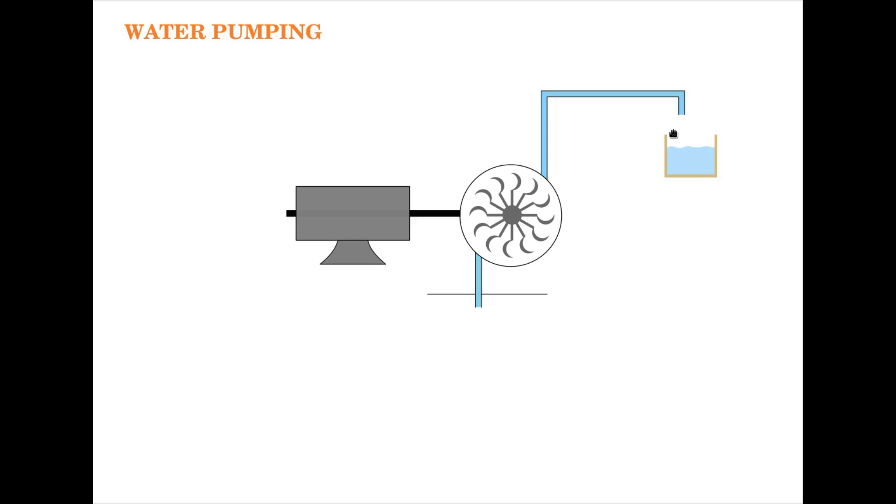Then you also have a delivery pipe where it delivers the water to a height, to an overhead tank. In most homes the water is collected in an underground sump and the water is lifted from this underground sump and then goes through the centrifugal pump. There is a pressure difference created between the inlet and the outlet which pushes the water up through the delivery pipe and then into the overhead tank.